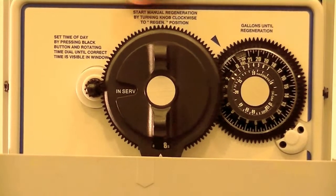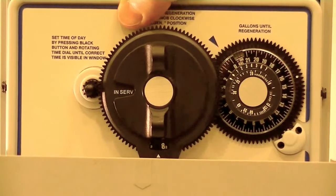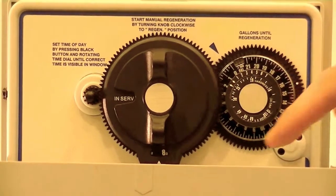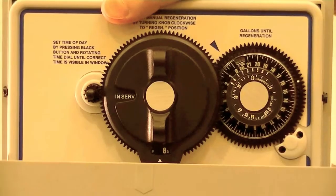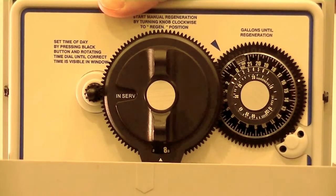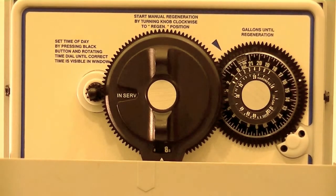Another option is if 2 AM is not a good time for you and you would be using water at that time, you can just change the time of day to fool the clock so that at 2 AM it's actually not 2 AM.